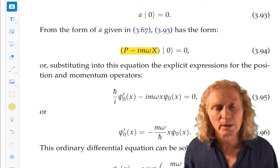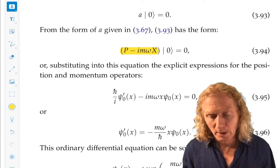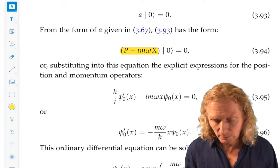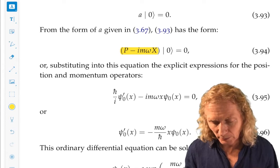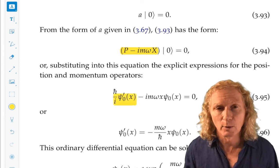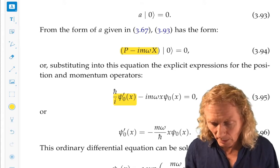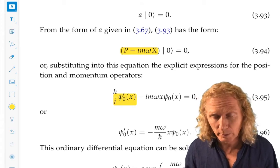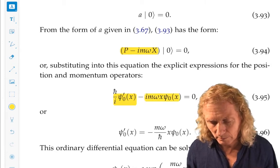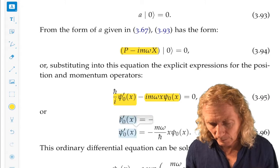Let's put in the expressions for the operators. p is h bar over i, d by dx, acting on psi zero of x. And we get h bar over i psi zero prime, the derivative, minus i m omega x, the multiplication by the coordinate psi zero of x. Or, this equation.